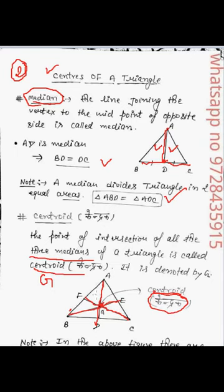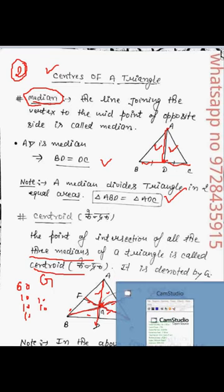In this figure there are six triangles — one, two, three, four, five, six — and the areas of these six triangles are equal. For example, if the area of triangle ABC is 60, then each smaller triangle's area is 10. Very important properties based on centroid and median will be discussed in our next video.